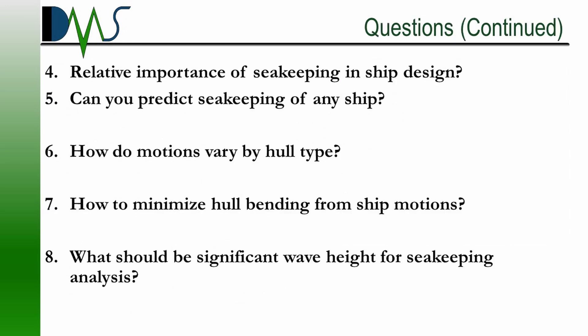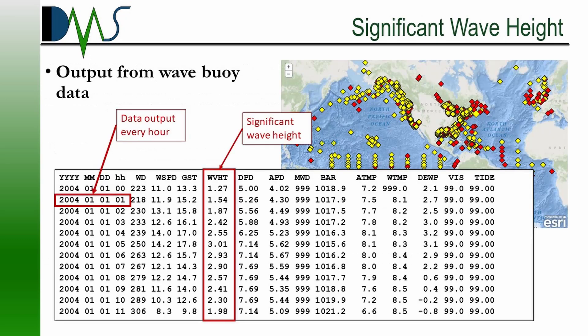What should be the significant wave height for a seakeeping analysis? That comes from wave buoy data or geographic data. If you look at a NOAA wave buoy, the data columns will actually specify the significant wave height as one of the data points. Then the question becomes: this is 30 years of wave buoy data — which point do you use? For engineering purposes, you'll probably pick the upper end of available wave heights within a region. The 90th or 95th percentile is a pretty typical level.